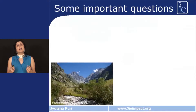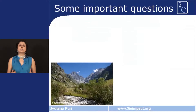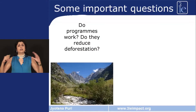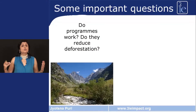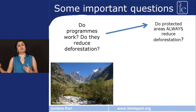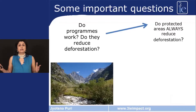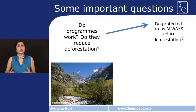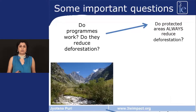Impact evaluations of climate change and environment programs can answer some important questions. They can ask the big first-order question: do these programs actually work? Do they reduce deforestation, for example? Then they can also answer second-order questions: do protected areas always reduce deforestation, and if they don't, under what circumstances do they not reduce deforestation?